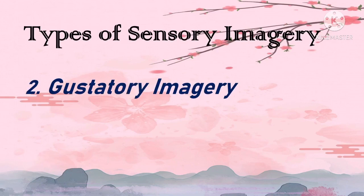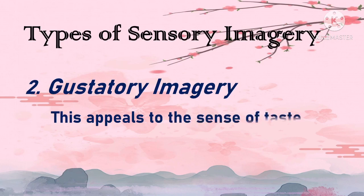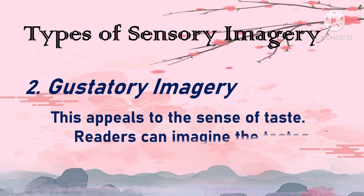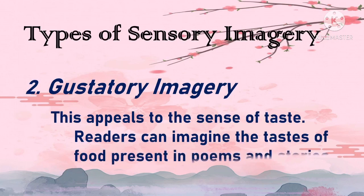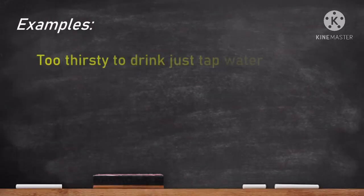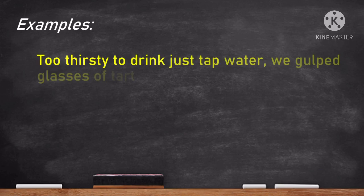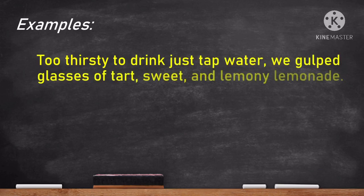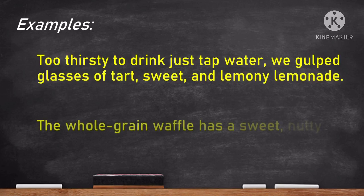Another type of sensory imagery is gustatory imagery. This appeals to the sense of taste — readers can imagine the taste of food present in poems and stories. Examples: 'Too thirsty to drink just tap water, we got glasses of tart, sweet, and lemony lemonade.' 'The whole grain waffle has a sweet and nutty taste.'